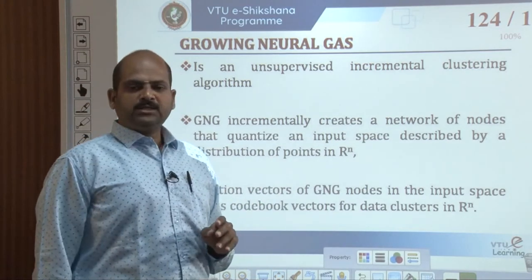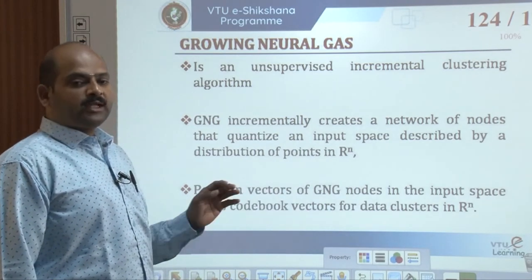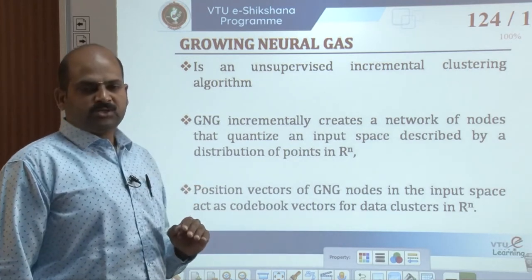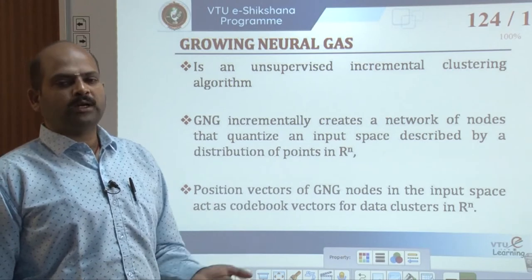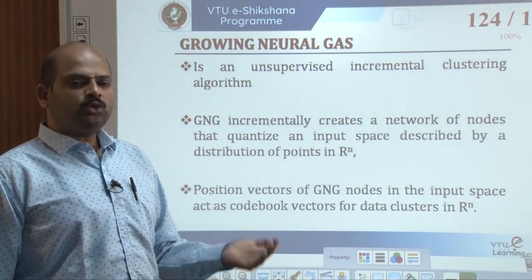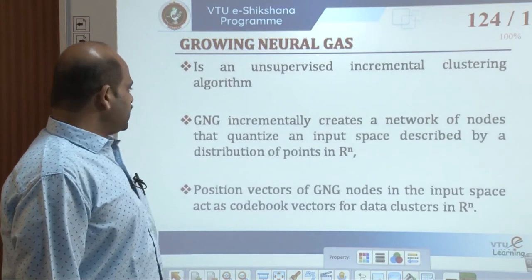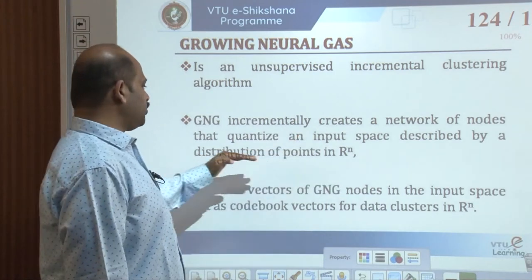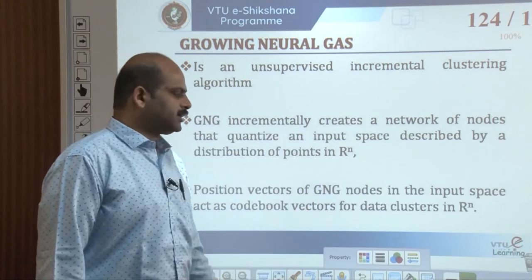Henceforth we refer to this algorithm as GNG. The GNG incrementally creates a network of nodes that quantize an input space described by a distribution of points, which might be drawn from an unknown probability density function. The position vector of GNG nodes in the input space acts as codebook vectors for data clusters. As mentioned, GNG can also be used to discover structures that closely reflect the topology of the input distribution.